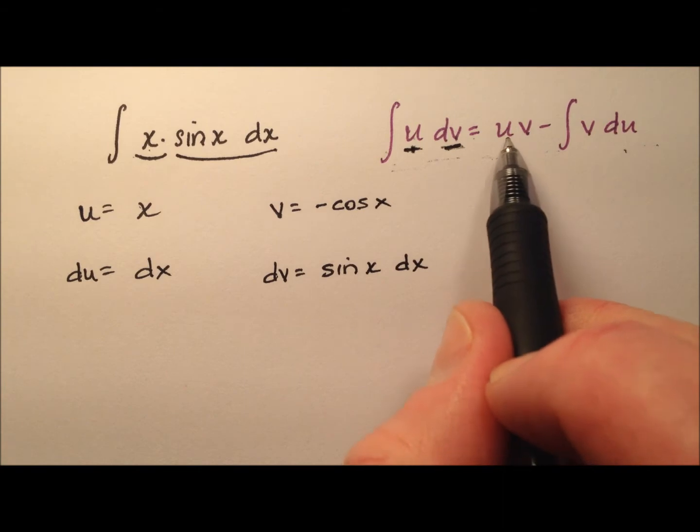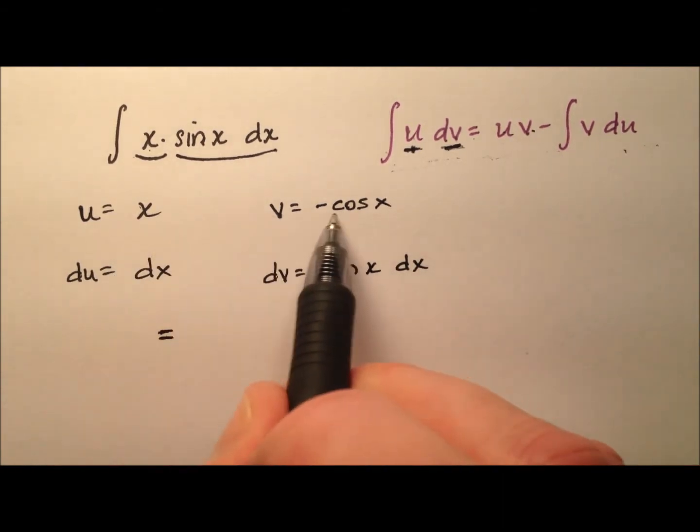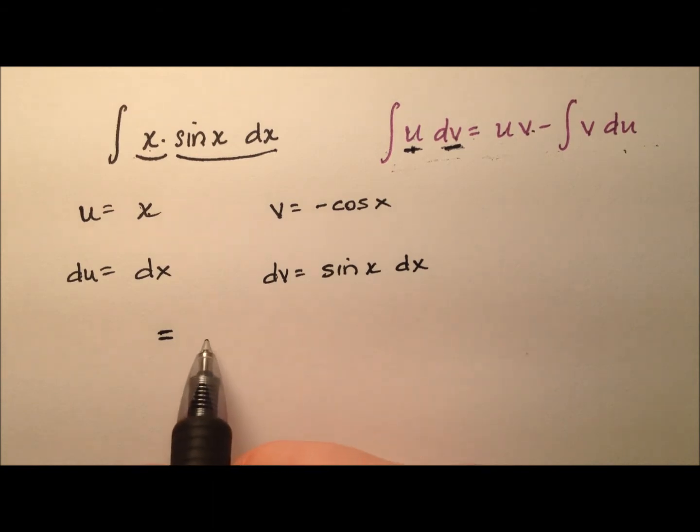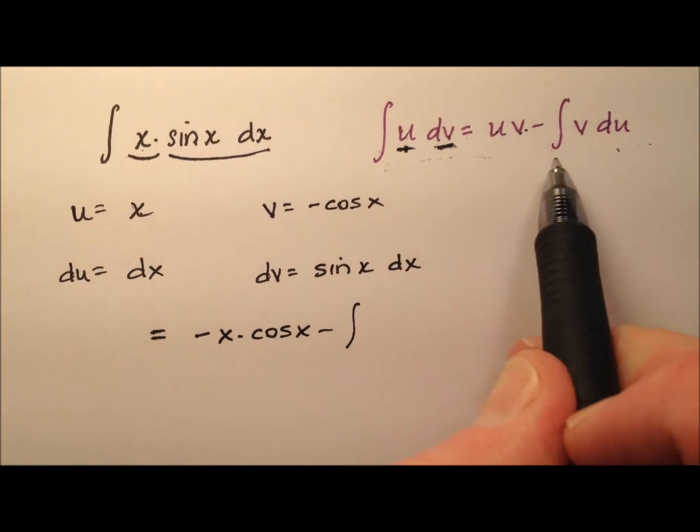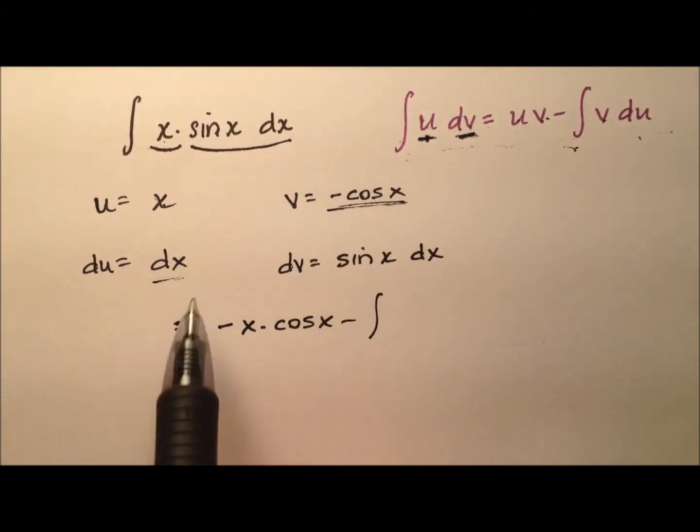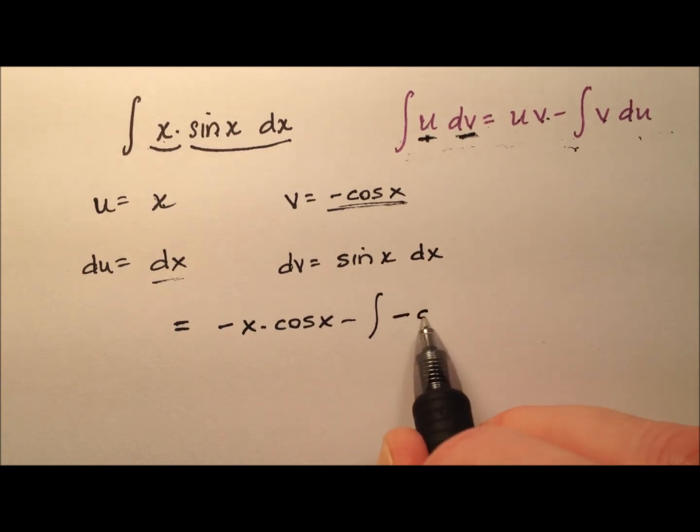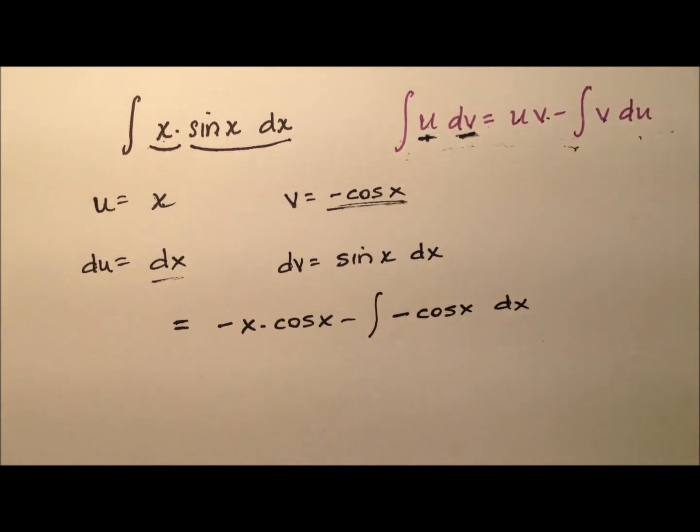Let's fill our formula out now. I have u times v and that's going to be the x times the negative cosine x so I could say negative x times cosine x minus the integral now of v du so it's the integral of negative cosine x basically just dx with respect to x.